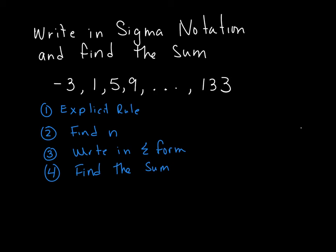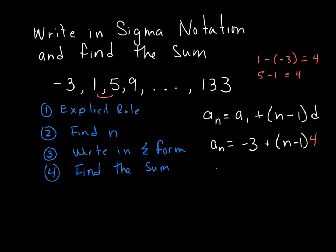But the explicit form for that rule is just a sub n equals a1 plus n minus 1 times d. So a sub n equals my first term, which is negative 3, plus n minus 1 times the common difference. And be careful with this particular common difference. The sequence is getting larger, so it's going to be positive. So it is 1 minus negative 3, which is equal to 4. You can test that out between the next two numbers, 5 minus 1 also equals 4. So my common difference here is 4. Therefore, a sub n equals negative 3 plus 4n minus 4, or equal to 4n minus 7.